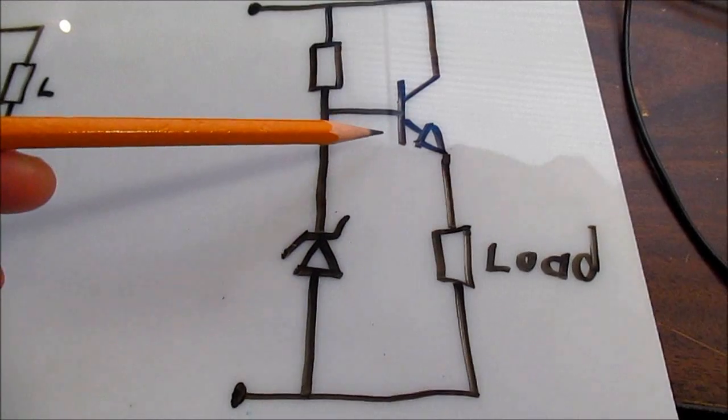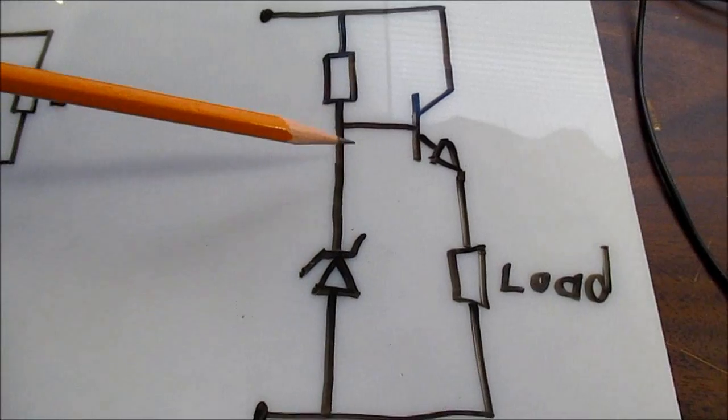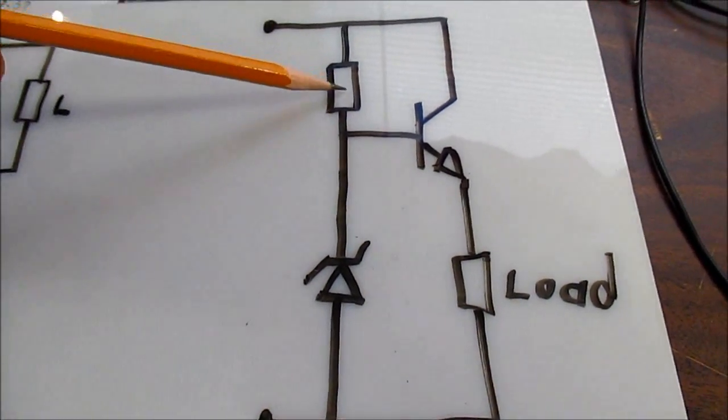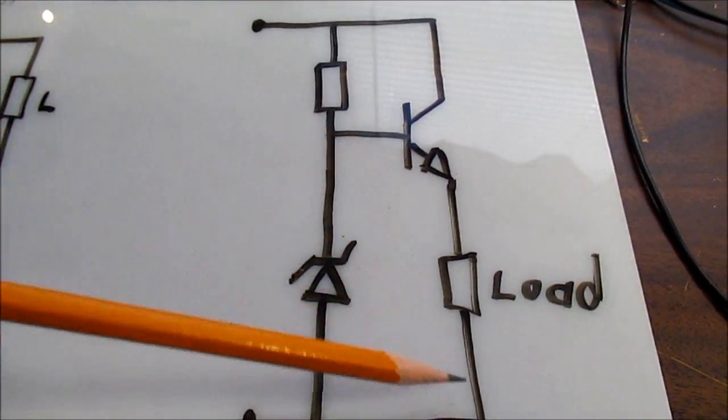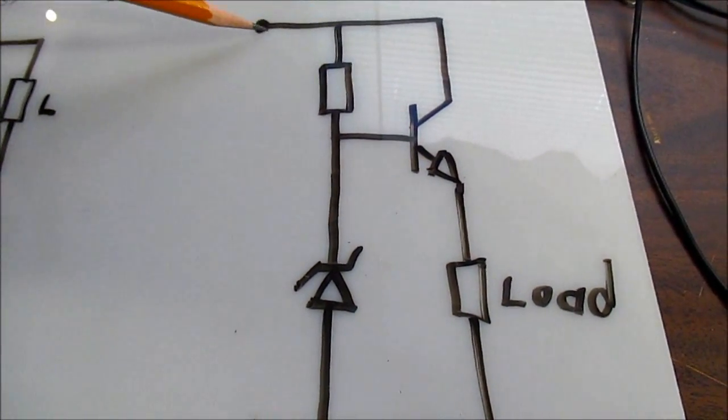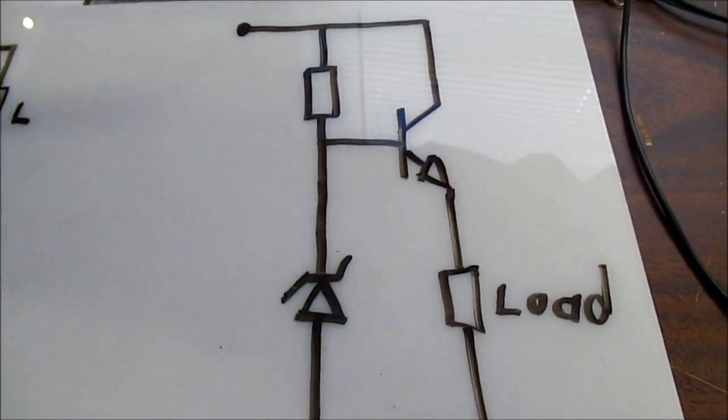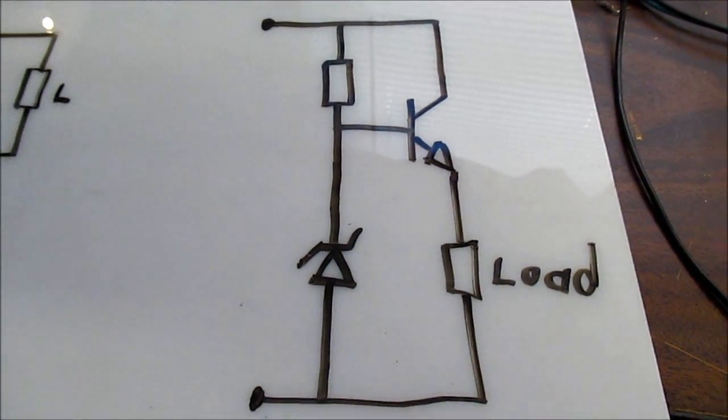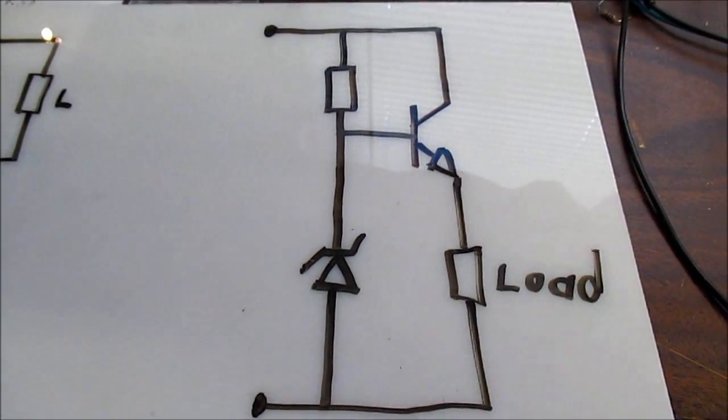So we add a transistor. What happens is you connect the transistor base between the resistor and the Zener, and you put the load in the emitter circuit, and the collector is connected direct to the supply. This type of circuit is called a common collector amplifier circuit. And we have to do that for a couple reasons.